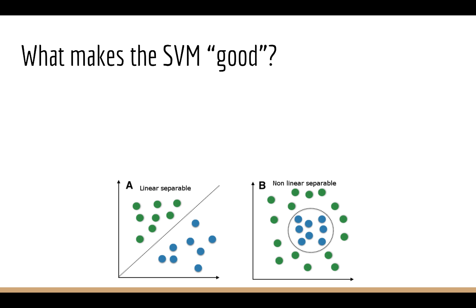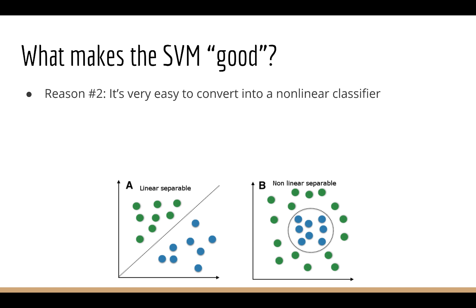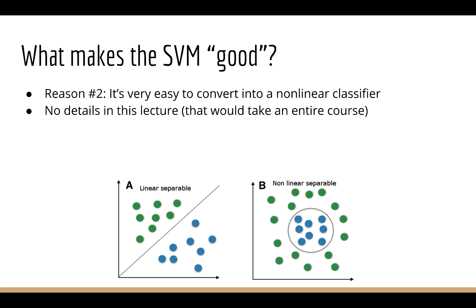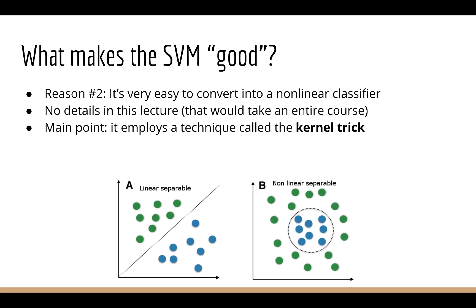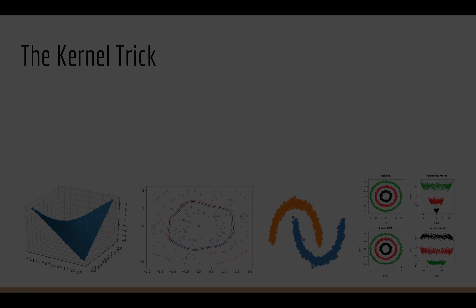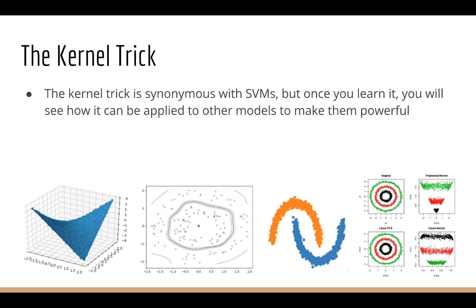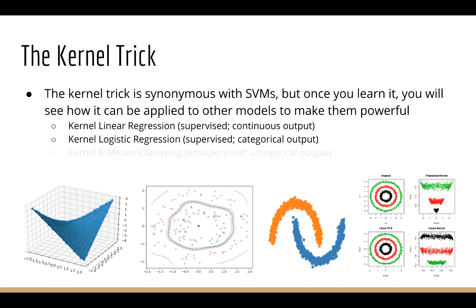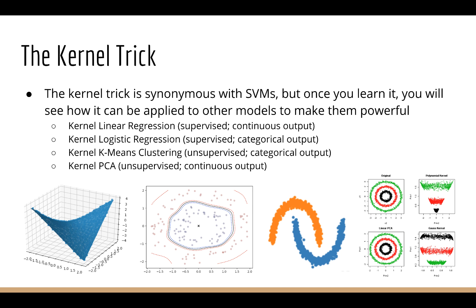The second reason that the SVM is a very good classifier is that it very easily transforms into a non-linear classifier. Most real-world datasets have non-linear decision boundaries. Lines are a good first approximation, but are rarely the final answer. SVMs are able to find non-linear decision boundaries by employing a technique known as the kernel trick. The kernel trick is synonymous with SVMs, but once you learn it, you'll see how it can be applied to other kinds of models as well. Some examples are kernel linear regression, kernel logistic regression, kernel k-means clustering, and kernel PCA for dimensionality reduction and data visualization.